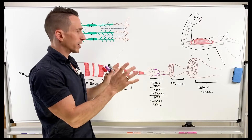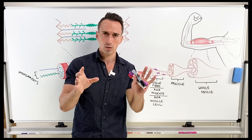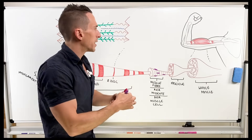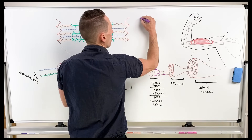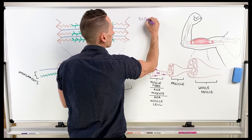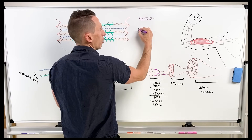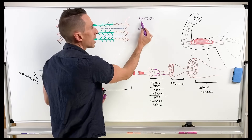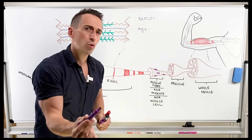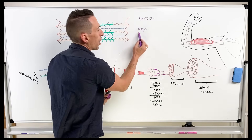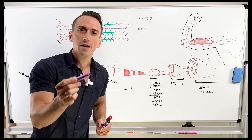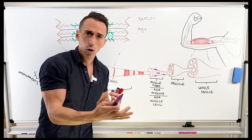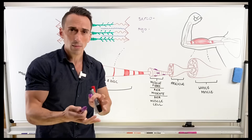First thing is, when we start talking about skeletal muscle, there are some important prefixes that you need to understand. These prefixes include sarco and myo. Importantly, sarco is Greek for muscle, and myo is Latin for muscle. They seem to be used as a prefix in front of words when we start talking about skeletal muscle in various aspects.